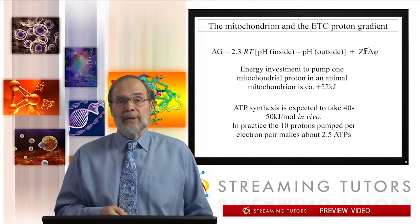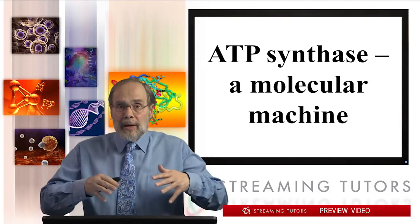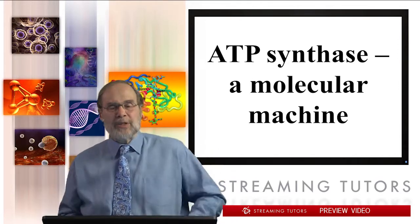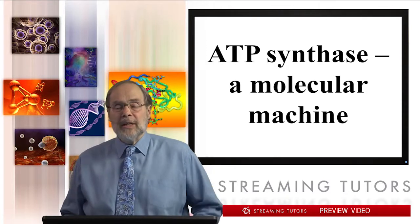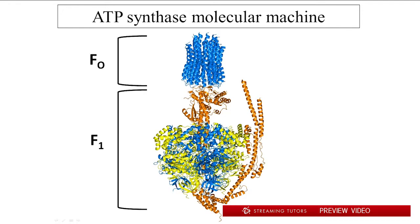Those are the abstract energetics and thermodynamic principles. Let's now look at the hardware — the machinery, the widget, the ratchets that make this work. This is the X-ray crystallographic structure of the ATP synthase. It has two components called F0 and F1, named for historical reasons during their purification. Very gentle urea treatment will dissociate F1 from F0. You can study their components separately, which turned out to be very useful in the early days of figuring out how they worked.